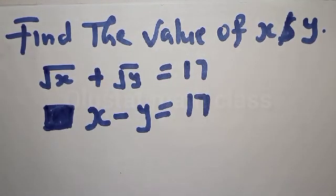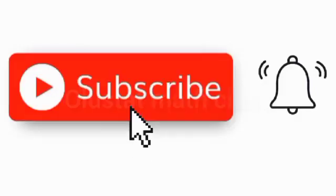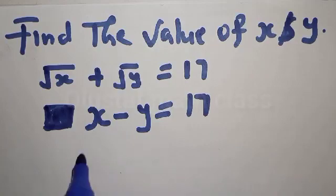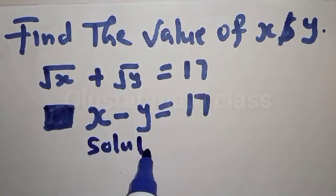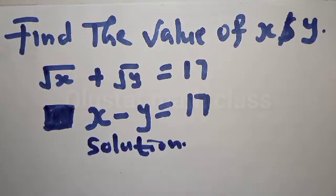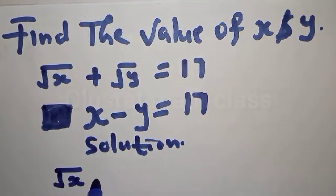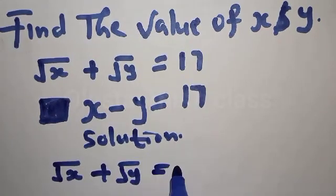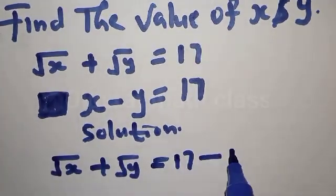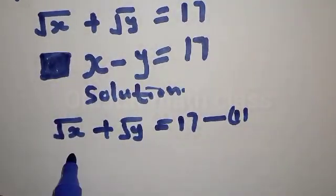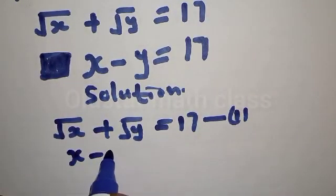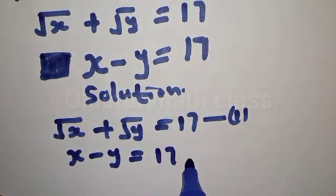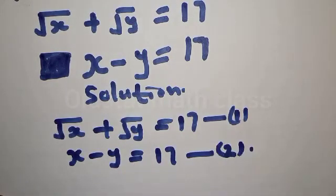Please don't forget to like, share, comment, and subscribe to this channel and turn on the notification bell so you can be notified whenever I post new video solutions. The given equations: equation 1 is square root of x plus square root of y equals 17, and equation 2 is x minus y equals 17.